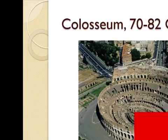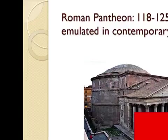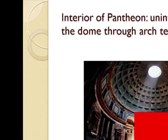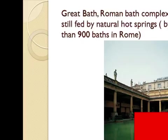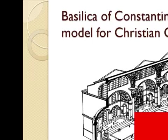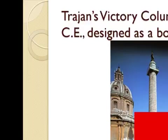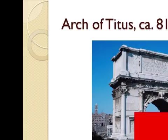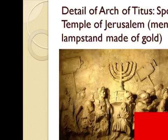The Colosseum, 70 to 82 CE. The Roman Pantheon, 118 to 125 CE, often emulated in contemporary architecture — its interior features the uninterrupted space of a dome made possible through arch technology. The Great Bath Roman bath complex in Bath, England, 54 CE, still fed by hot springs. By the 3rd century there were more than 900 baths in Rome. The Basilica of Constantine became a model for Christian churches. Trajan's Column, 113 CE, designed as a book-like scroll. The Arch of Titus, ca. 81 CE, marble — with detailed relief showing the spoils from the Temple of Jerusalem, including a menorah and gold lampstand.